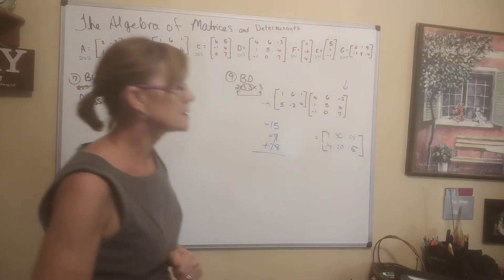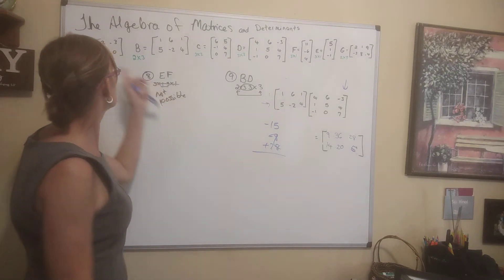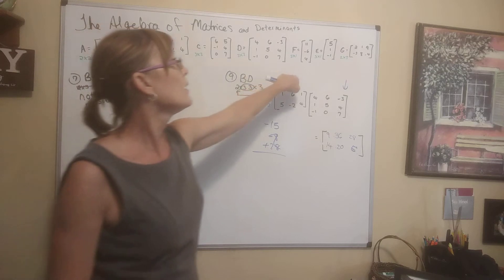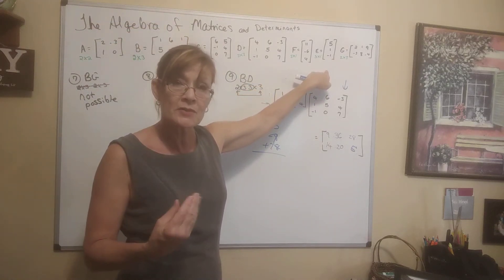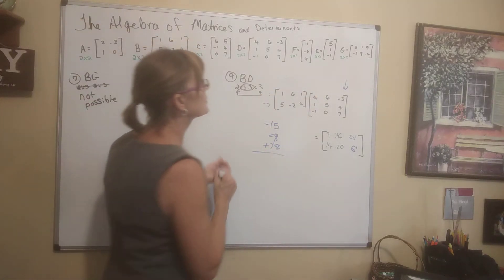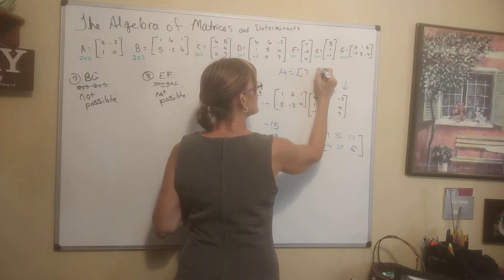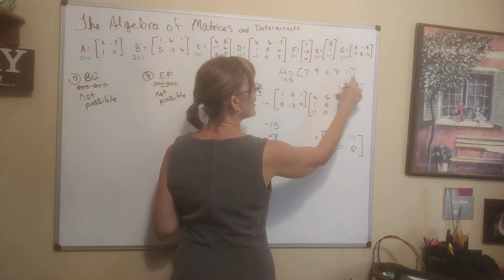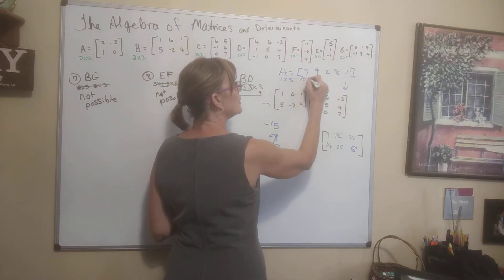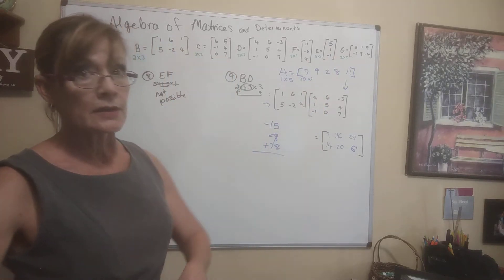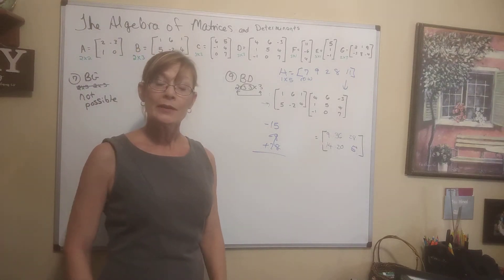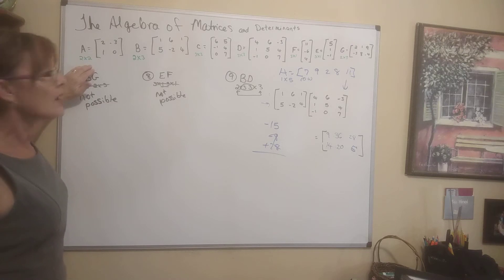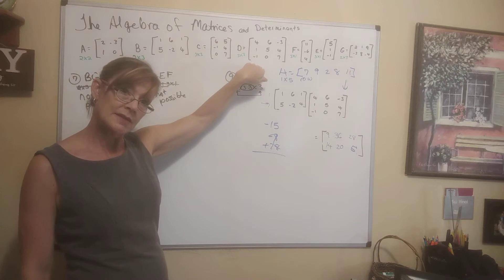Lastly, determinants. A determinant is a handy number we use to calculate things — the determinant of a matrix. Some of these matrices have special names. E and F are called column matrices — there's only one column of numbers. A matrix like H = [7, 9, 2, 8, 11] would be a 1 by 5 and is called a row matrix. Matrix A and D are called square matrices because they have the same number of rows as columns.